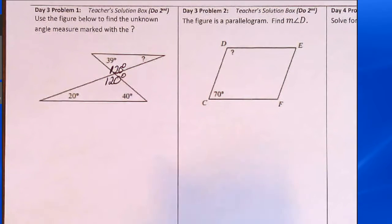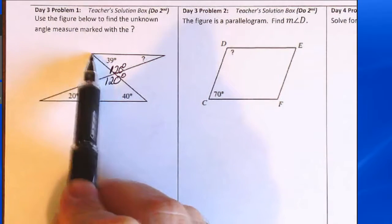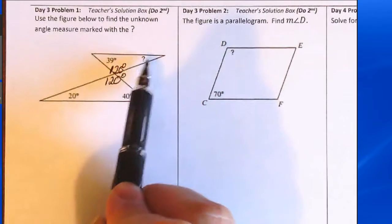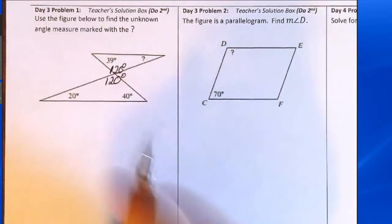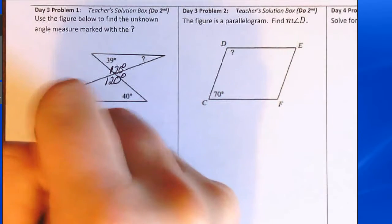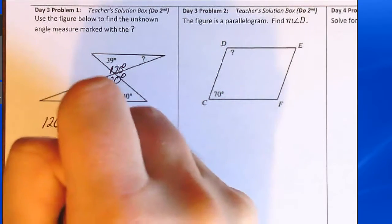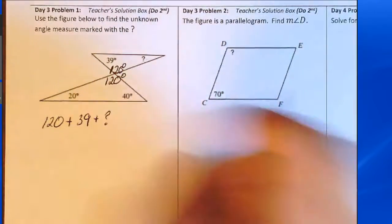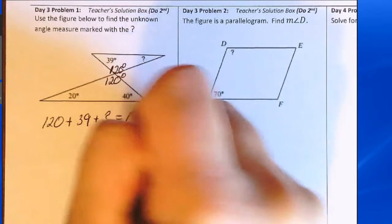Now let's focus our attention on the top triangle. In the top triangle we know two of the angles and we don't know the one with the question mark. So the 120 plus the 39 plus the angle with the question mark will add up to 180.